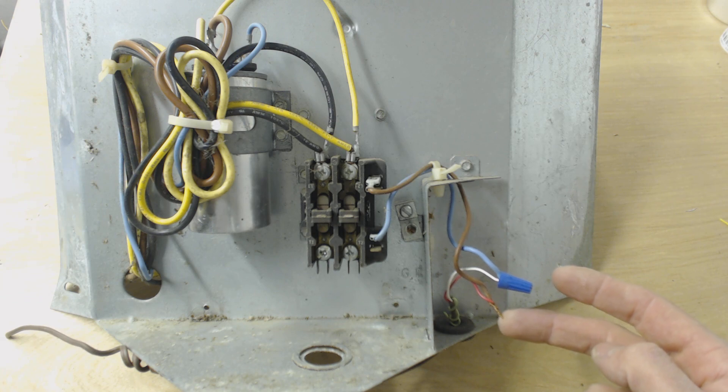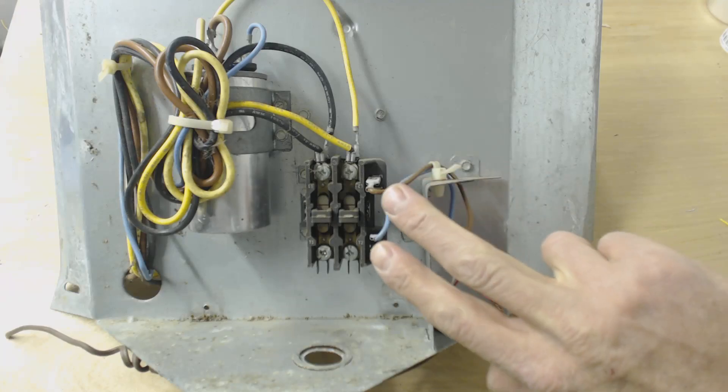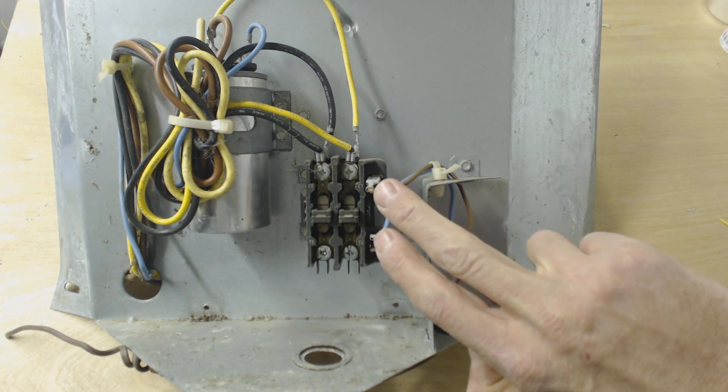One will be 24 volt power and one will be 24 volt common. It does not matter, once again, if you power with hot here and common here, or hot here and common there. You just need to power a load that is a coil.